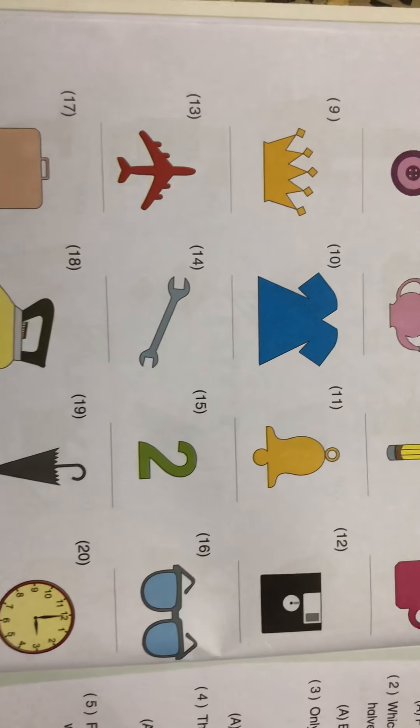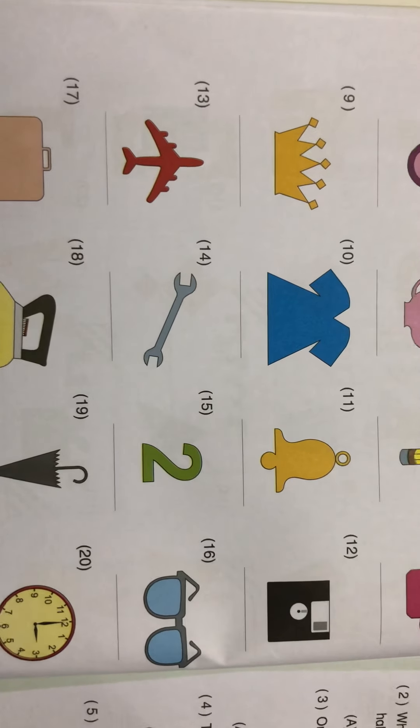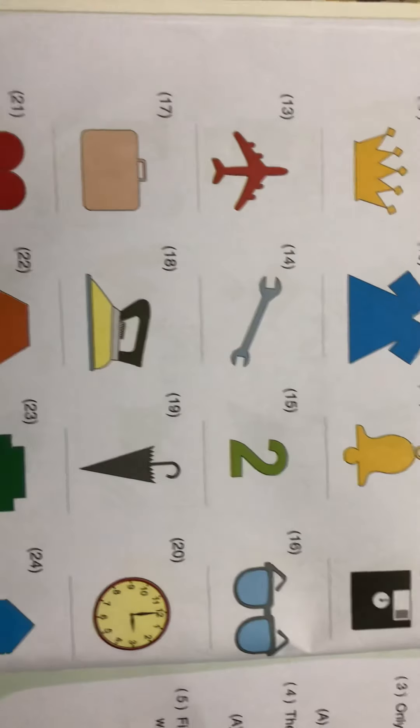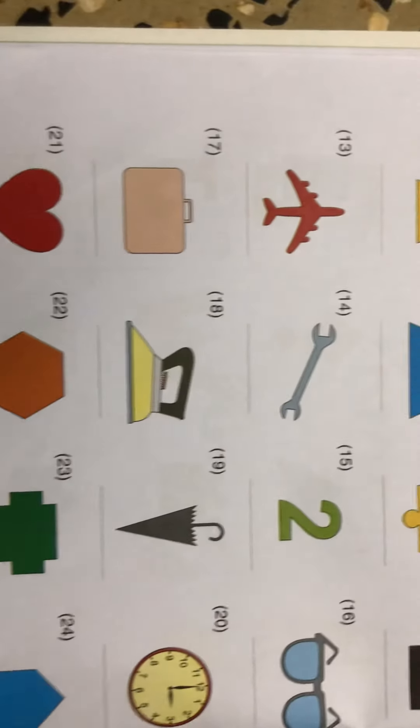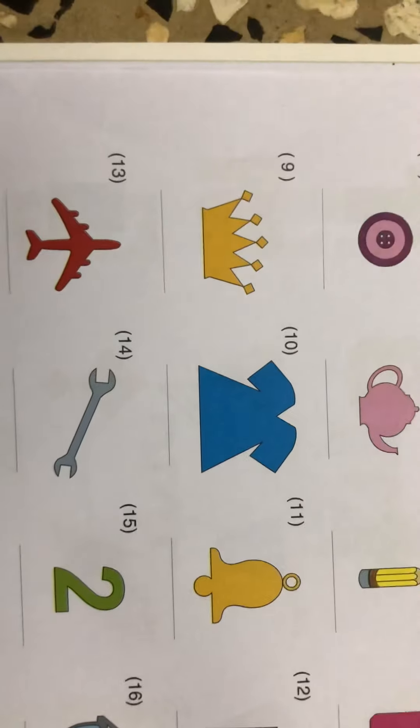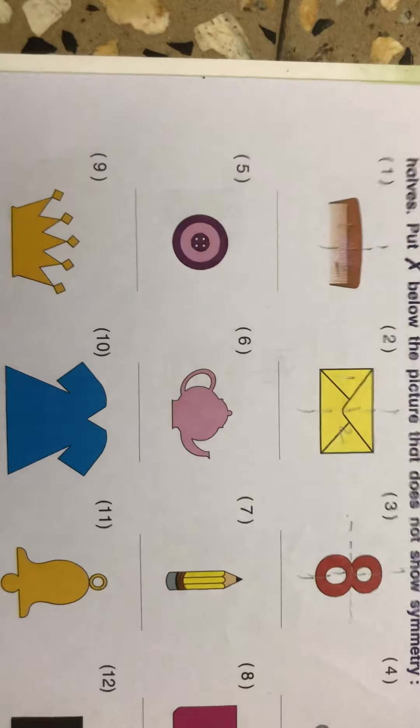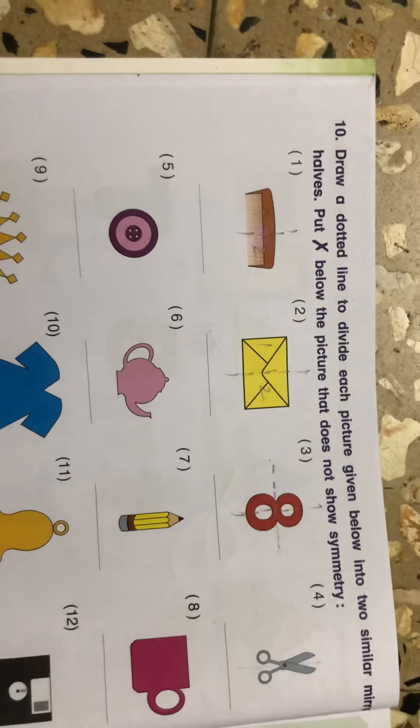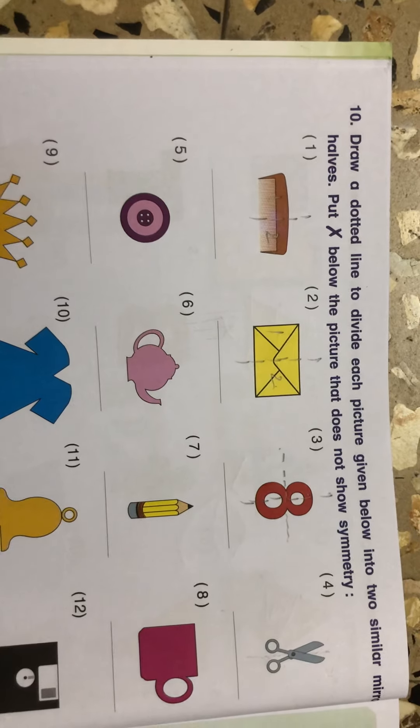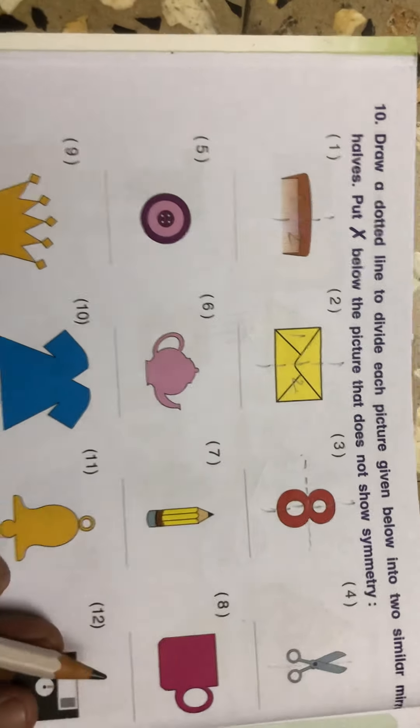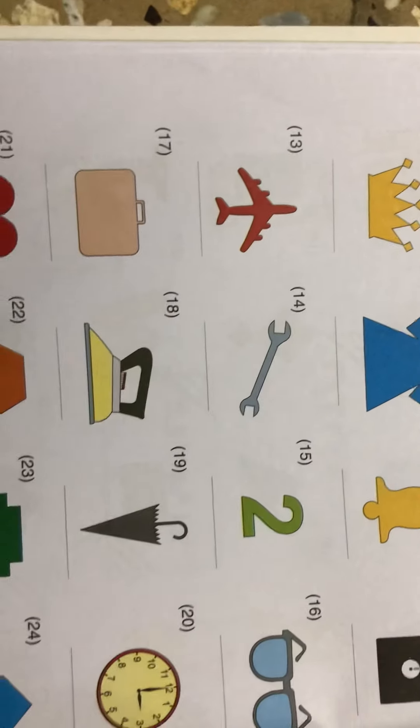Most of them are symmetrical. So try to find out all the symmetrical pictures in this given page. And if it is not symmetrical, then you have to put cross mark. See, you will do one thing. See this iron.